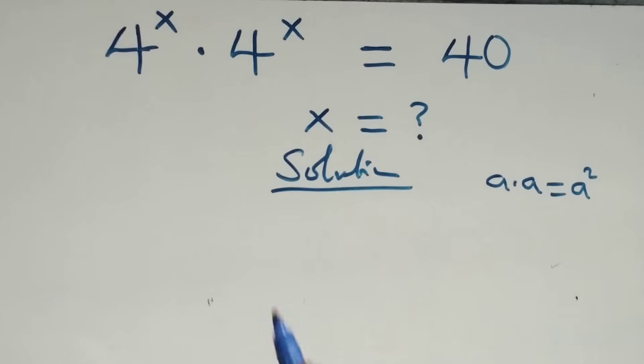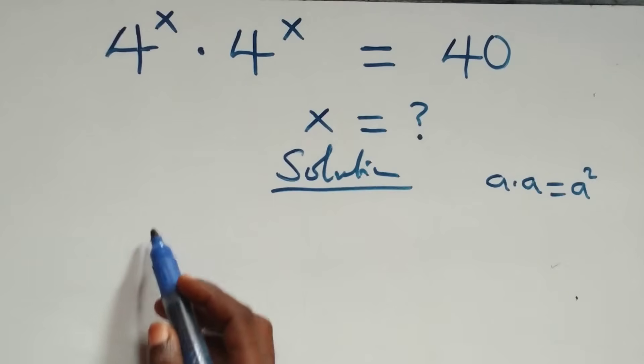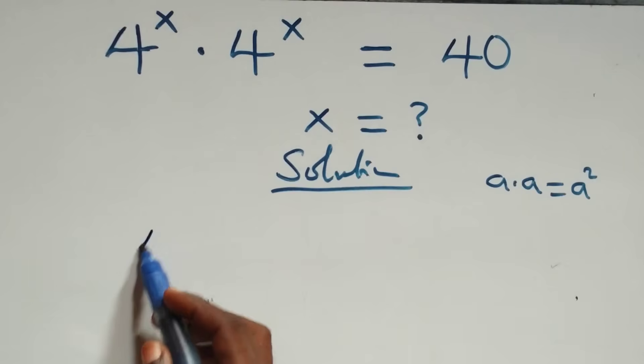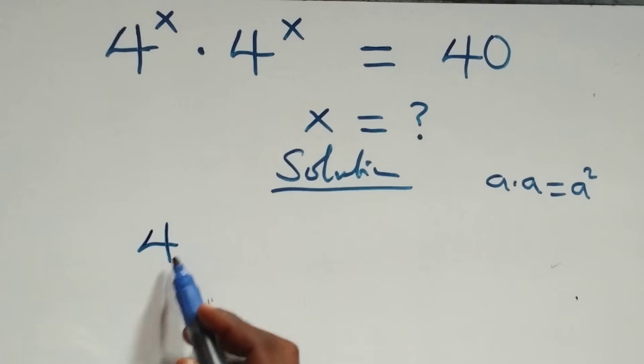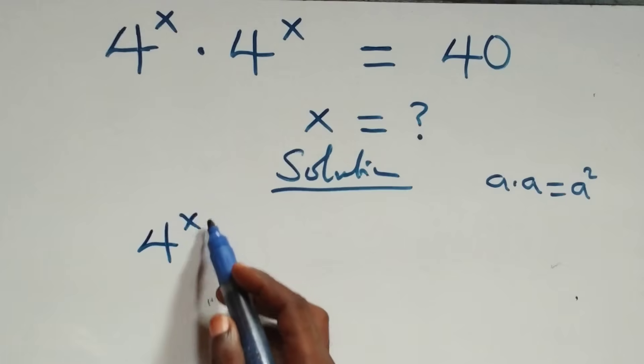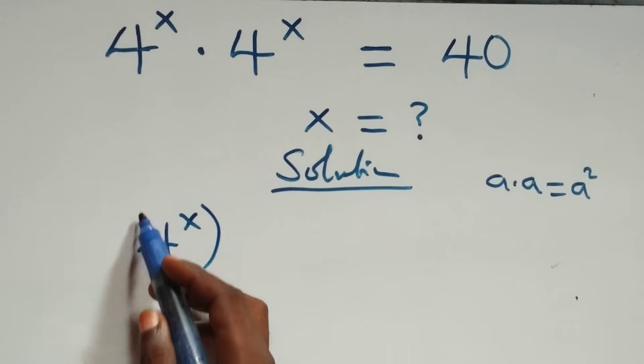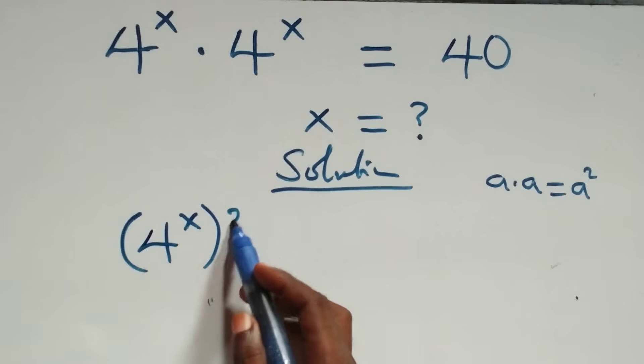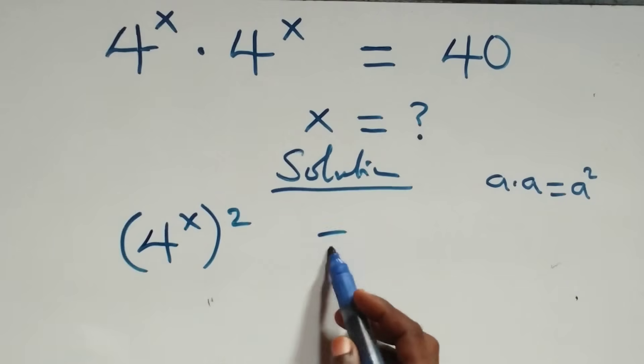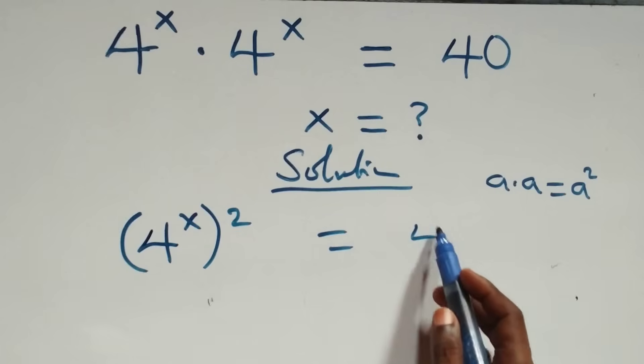Since this is multiplying here, we can raise it as four raised to power x squared, then equals to forty.